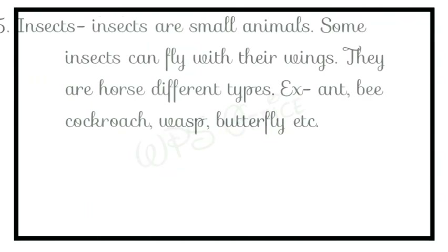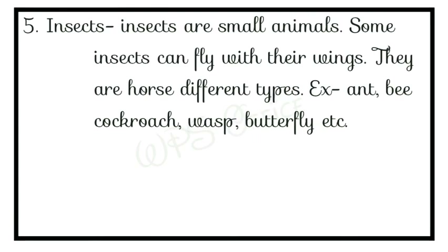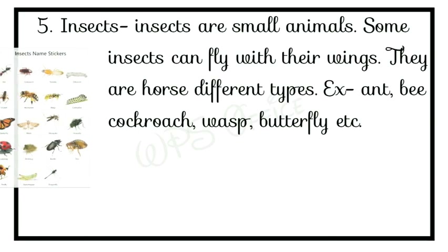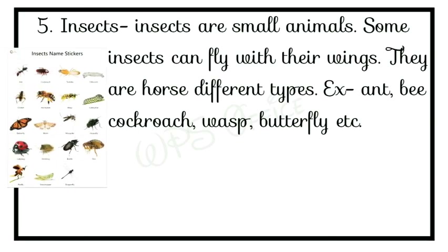The sixth type is insects. Insects are small animals. Some insects can fly with their wings — they have small wings which help them to fly. They are of different types; some are big insects and some are very small. For example, ant, cockroach, butterfly, bee, and wasp.